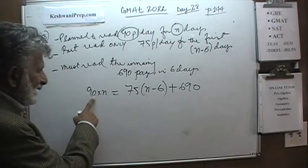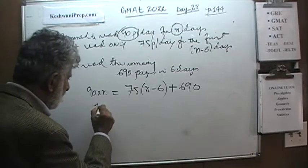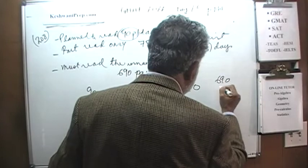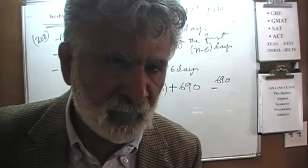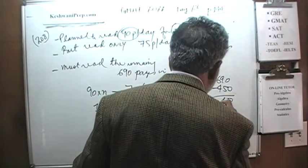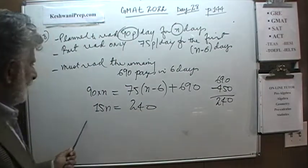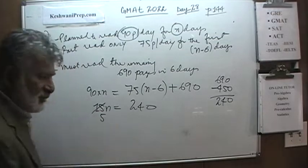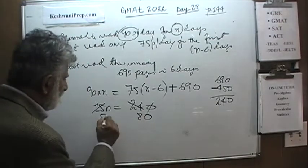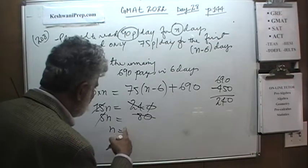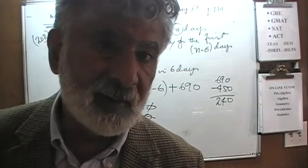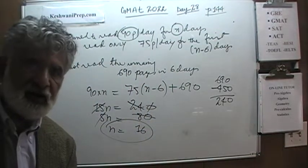We solve for n: 90n = 75n − 450 + 690, so 15n = 240, and n = 16. We had 16 days altogether to complete the assignment.